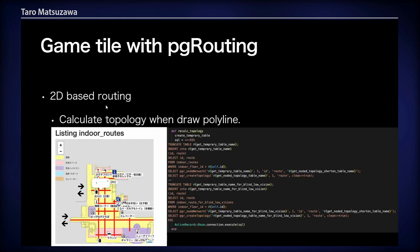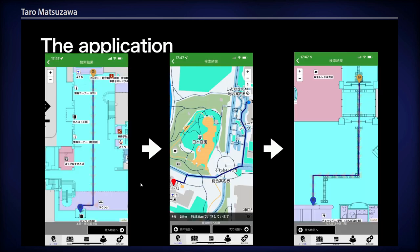Game Tile with PG Routing is easy to implement, because 2D-based routing is easy — draw a polyline and create topology each time. The application shows indoor route and outdoor route and indoor route.